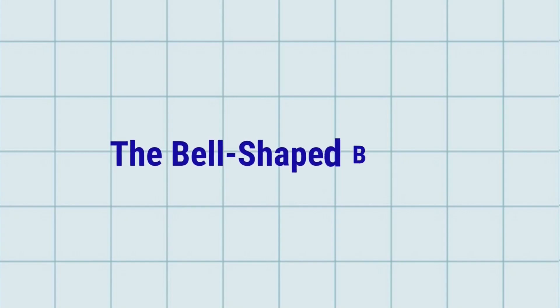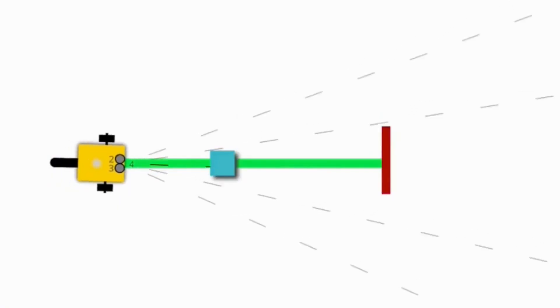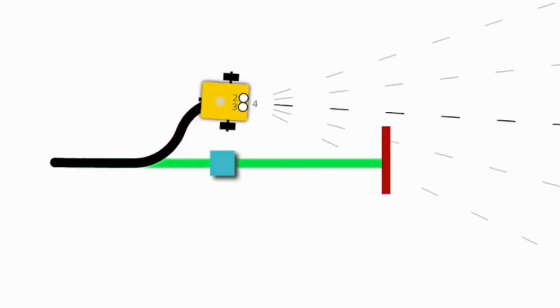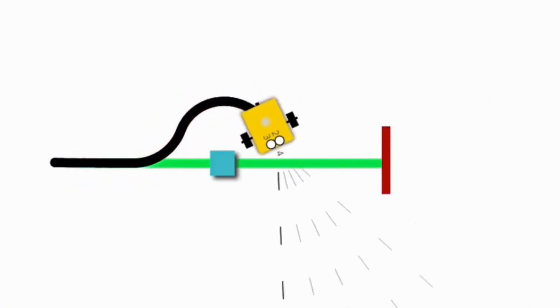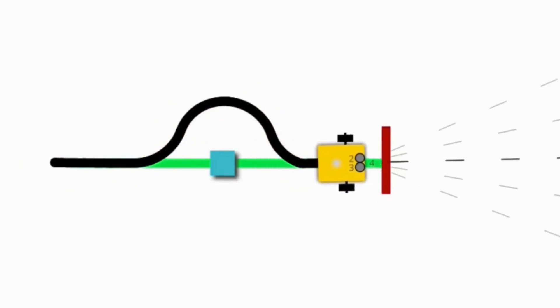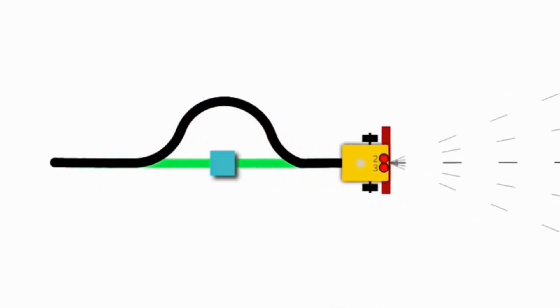And finally, the bell-shaped bypass. This method uses curves instead of straight lines, creating a smooth path around the obstacle that's more natural and fluid, though slightly harder to program.